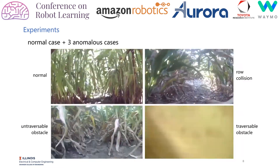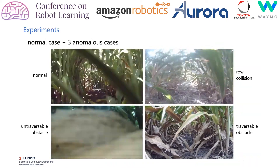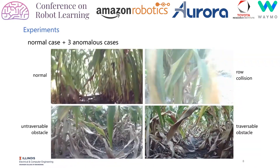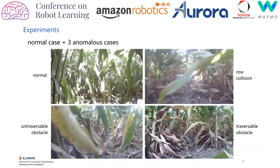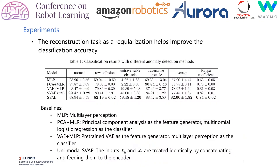We evaluated the proposed model on real field robot data collected from August to October 2019. According to our dataset, we divide the anomalous cases into three subclasses: row collision, untraversable obstacles, and traversable obstacles. Our model outperforms other baseline methods in terms of classification accuracy, which suggests that the reconstruction task during training, as well as the multi-modal aspect of our model, does help improve classification performance. Please refer to the paper for more quantitative results.